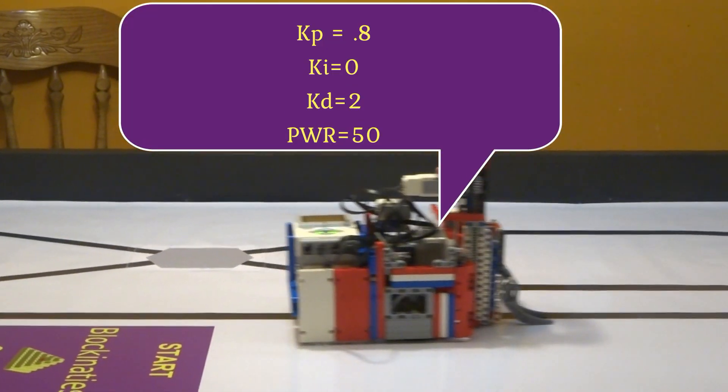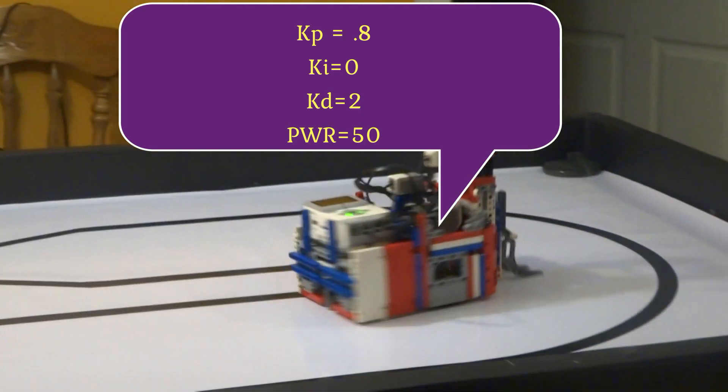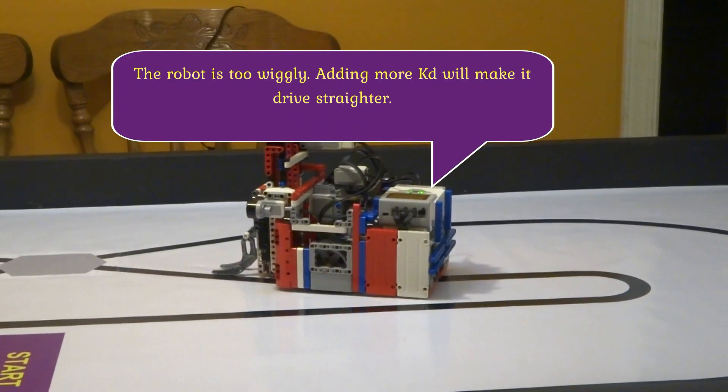We're going to double the KP and add a KD of 2. Too many wiggles means you need more KD.